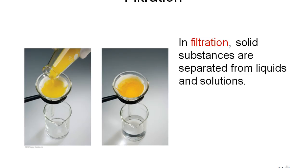Now, separation of mixtures. A mixture has two or more compounds in it, and there are a couple of methods we use. One method is called filtration, used when you have a mixture of a solid and a liquid. You make a cone out of filter paper, pour your mixture into it, the liquid passes through and is collected in the other beaker, and the solid remains in the filter paper. Very simple — and you will be doing this a lot in the lab.